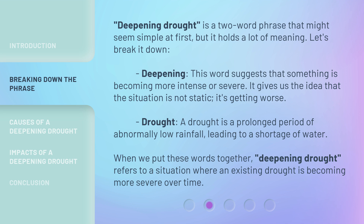It gives us the idea that the situation is not static — it's getting worse. A drought is a prolonged period of abnormally low rainfall leading to a shortage of water. When we put these words together, 'deepening drought' refers to a situation where an existing drought is becoming more severe over time.